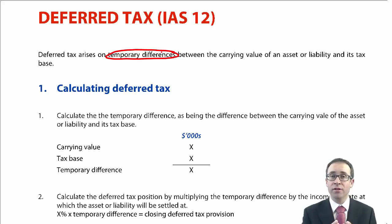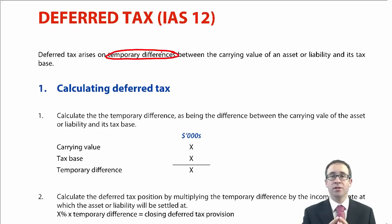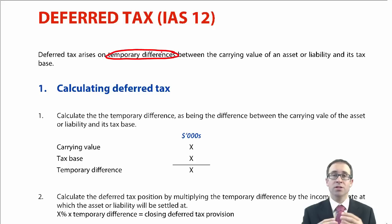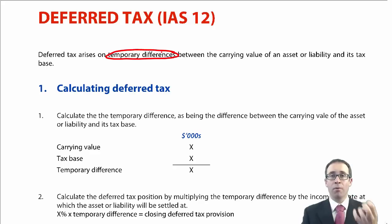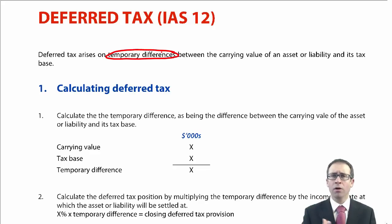If there were permanent differences, there was no deferred tax. Things such as client entertaining gave rise to a permanent difference because that was allowable under accounting rules but not allowable under your tax rules.